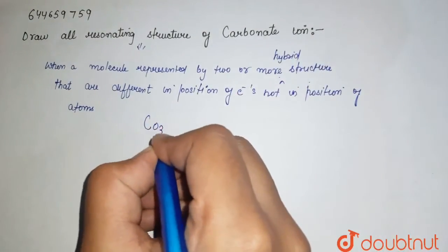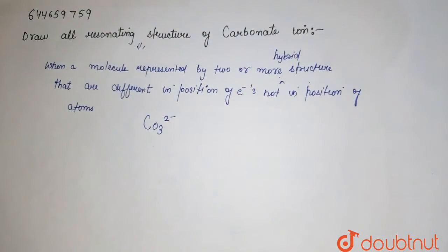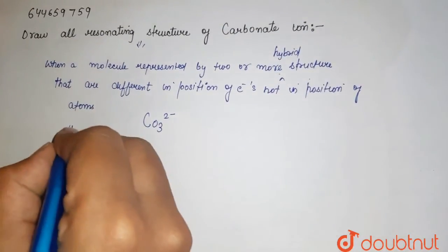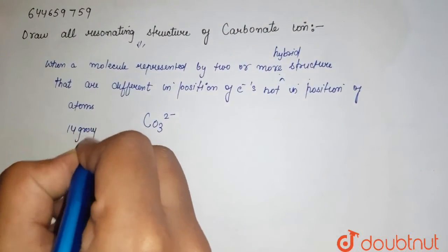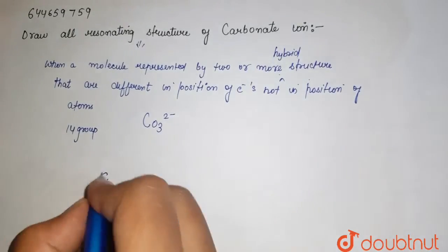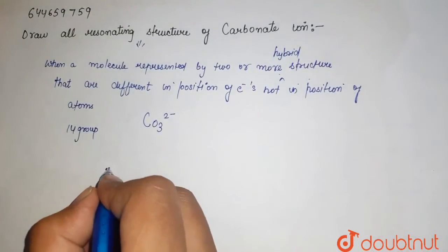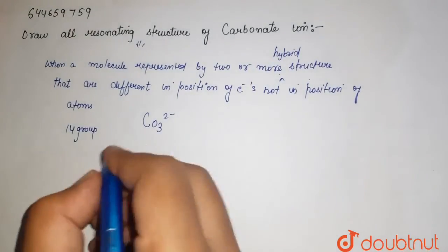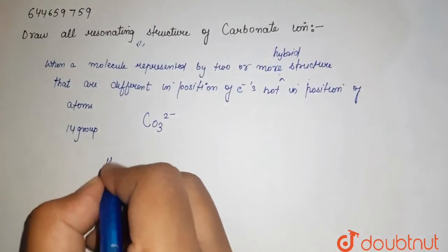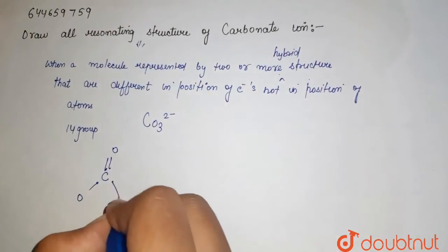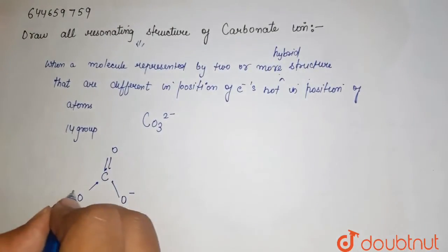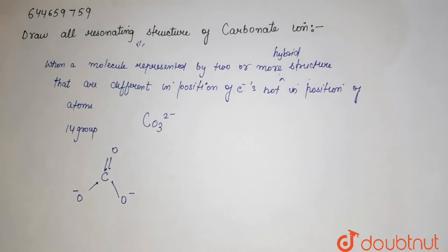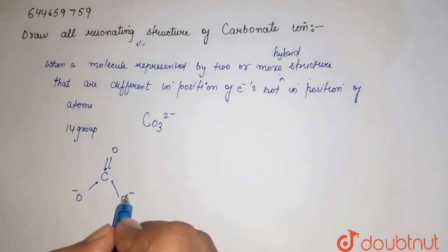Now we have the carbonate ion, which is CO₃²⁻. Carbon belongs to group 14, so it has four valence electrons. Here is carbon in the center with one oxygen here, one oxygen here, and one oxygen here. The 2-negative charge means one negative on one oxygen and one negative on another.